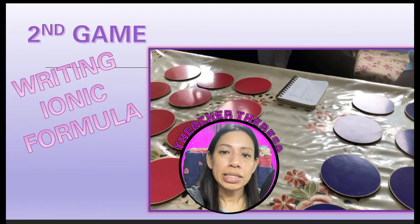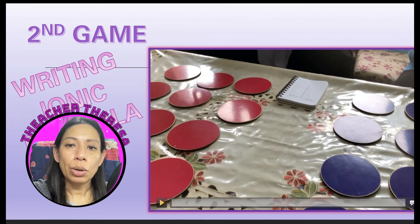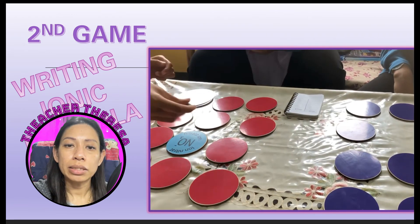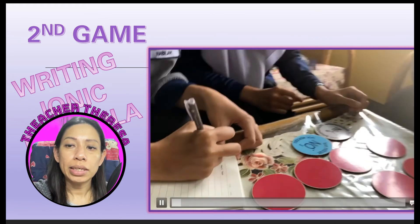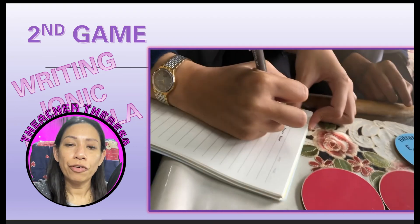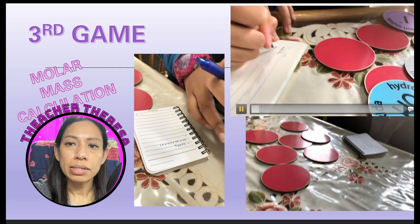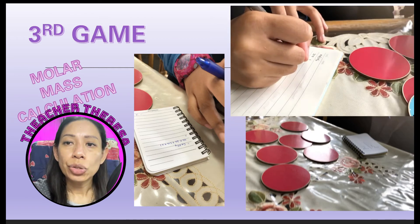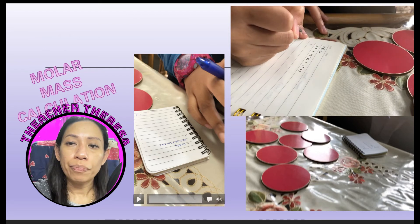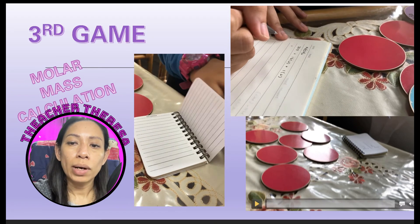They will then move to the next part of writing the ionic formula. Students open two different cards — one negative and one positive — and need to write down the formula of the ionic compound formed. In the molar mass calculation phase, they calculate the molar mass formed by the formula, which requires some mathematical knowledge. If students get the correct formula, they are awarded one point.